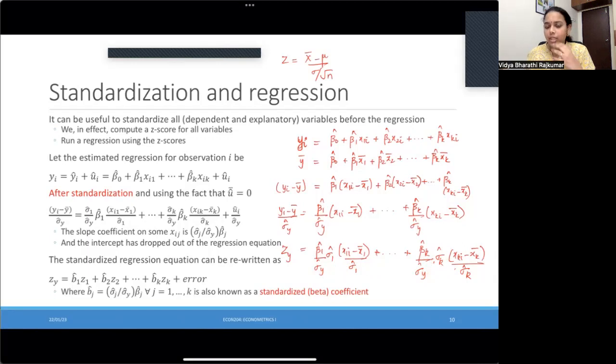Now, once we do this, I can just simply rewrite this particular expression in this manner that you see right here. Z-score for y is now being regressed on all of the regressors in their standardized versions. x1 standardized is given by z1, x2 standardized is given by z2 and so on up to zk, and then there's an error term.